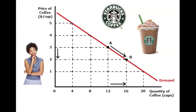Now, if we look at this demand curve, effectively what we're looking at is a snapshot in time. If we consider this lady's life and all of the various decisions she has to make, this curve represents her decision-making with respect to Starbucks coffee — that is, if everything in her life stays exactly as it is, her demand for Starbucks coffee will be as shown in this curve.